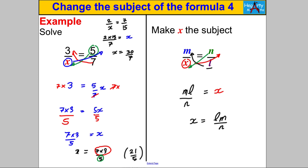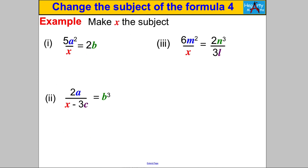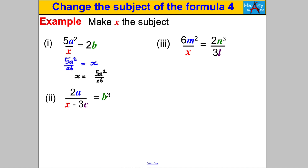Here are three more for you to have a go at without the solve step — pause the video and see if you can do each of those. For the first one: I'm going to multiply both sides by X to get X off the bottom, and divide both sides by 2b. So in one move the X and the 2b swap places: X is therefore equal to 5a squared over 2b. Writing X on the left: X is 5a squared over 2b.